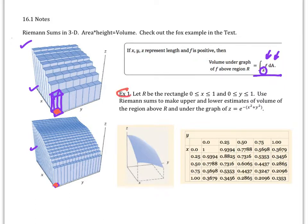Let's look at example number one. Let R be the rectangle that's closed on these intervals: x between 0 and 1, y between 0 and 1. Use Riemann sums to make an upper and lower estimate of the volume of the region above R and under the graph z equals e to the negative x squared plus y squared in quantity.